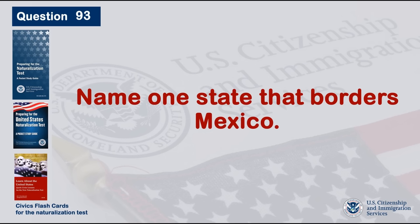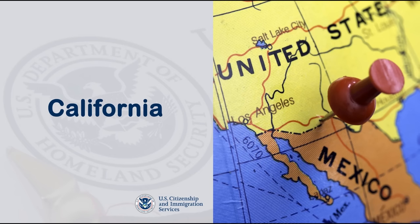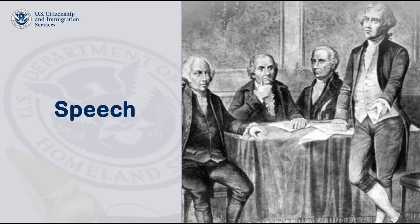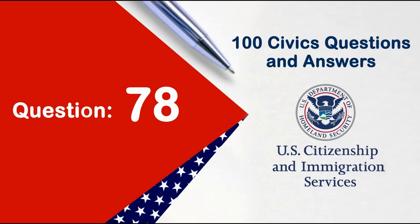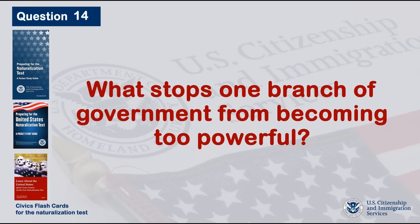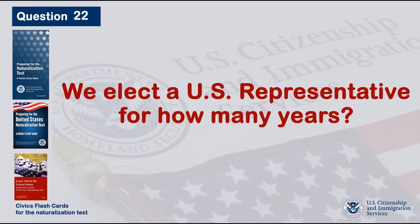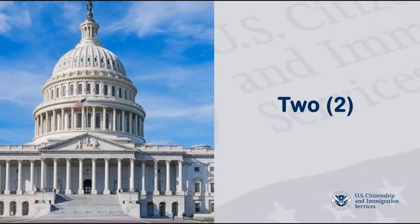Name one state that borders Mexico. California. What is one right or freedom from the First Amendment? Speech. What stops one branch of government from becoming too powerful? Checks and balances. We elect a U.S. representative for how many years? Two.